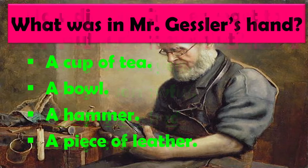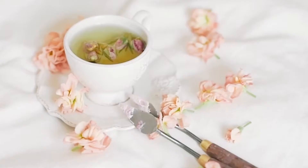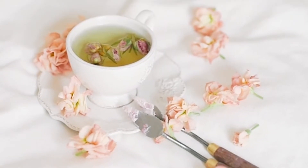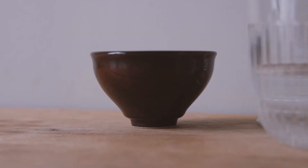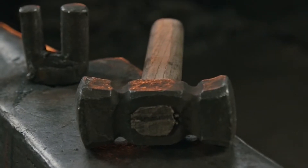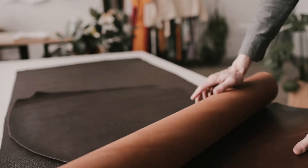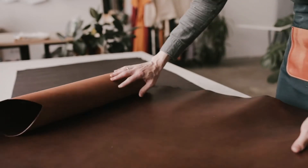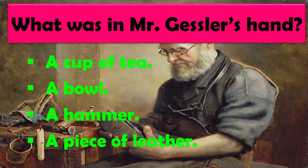What was in Mr. Gessler's hand? Mr. Gessler ke haath mein kya tha? Options: A cup of tea, a bowl, a hammer, a piece of leather. The right answer is a piece of leather.